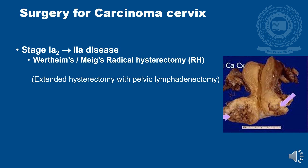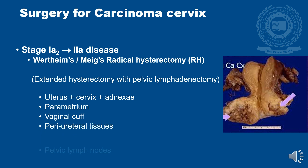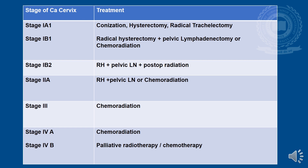Structures removed in radical hysterectomy include the uterus, cervix and adnexa, parametrium, vaginal cuff, periureteral tissues, and pelvic lymph nodes. In summary: Stage 1a1 — conization, hysterectomy, or radical trachelectomy; Stage 1b1 — radical hysterectomy, pelvic lymphadenectomy, or chemoradiation; Stage 1b2 — radical hysterectomy and pelvic lymph node removal followed by post-op radiation; Stage 2a — radical hysterectomy and pelvic lymph node removal or chemoradiation; Stage 3 and Stage 4a — chemoradiation; Stage 4b — palliative radiotherapy or chemotherapy.